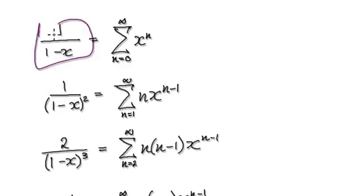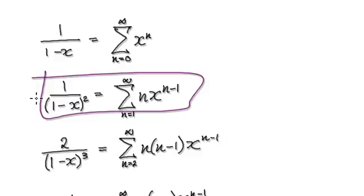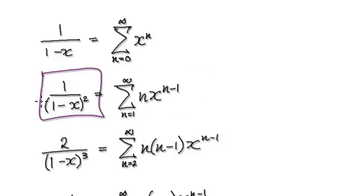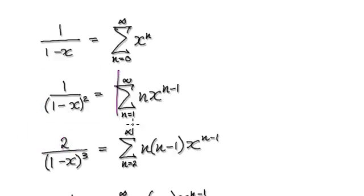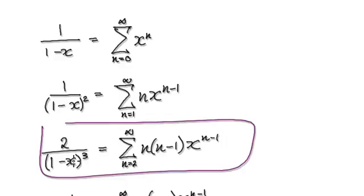Differentiate it — that gives you this. Then differentiate it again. Remember there's a 2 here. Differentiate this — that gives you this. Remember, after the first differentiation you start at n equals 1, and after the second differentiation you start at n equals 2. So that gives you this.